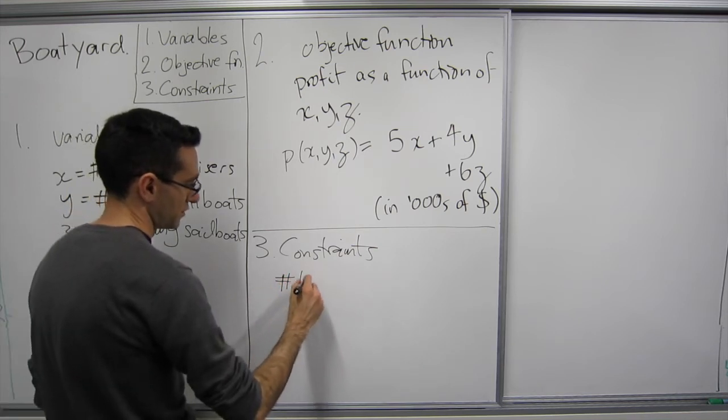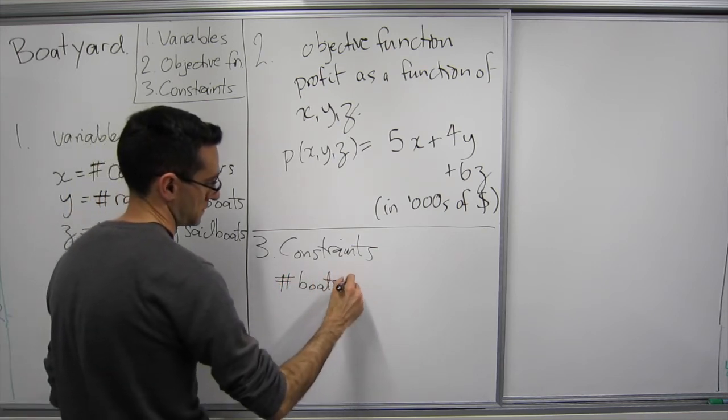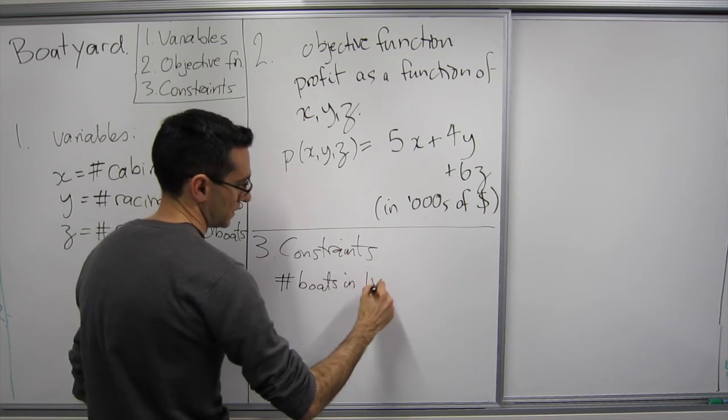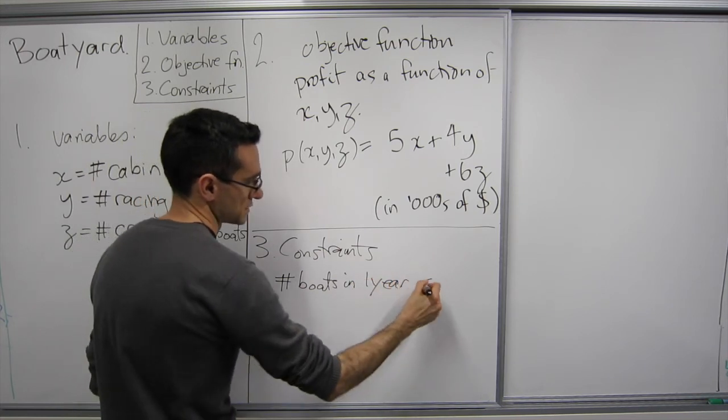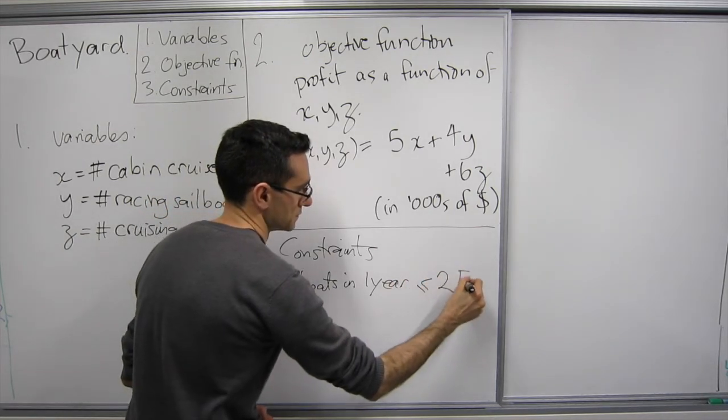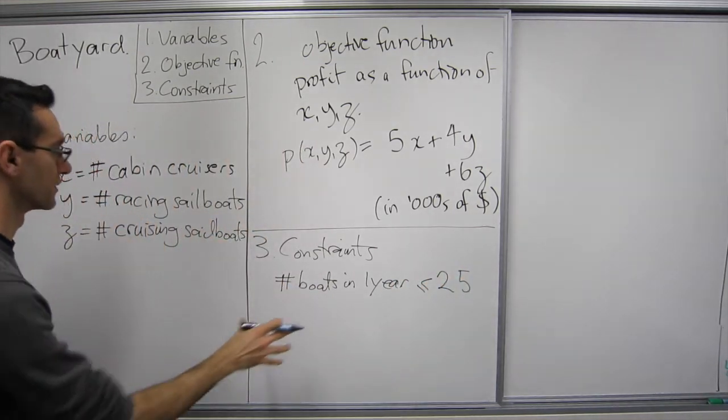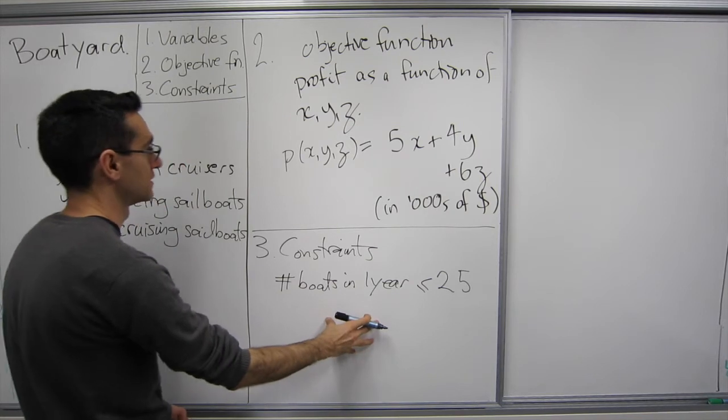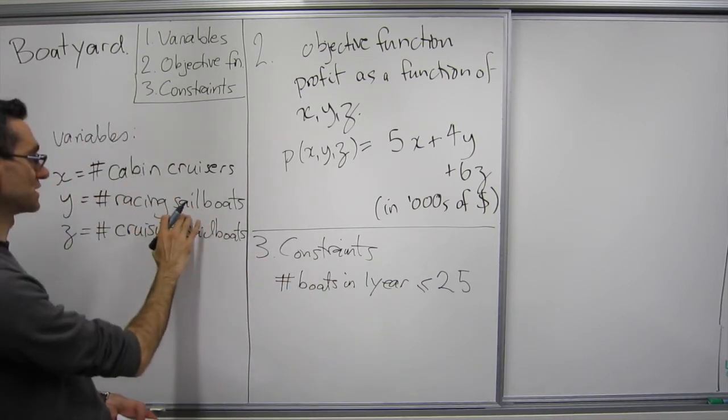So number of boats in one year has to be less than or equal to 25.